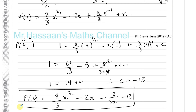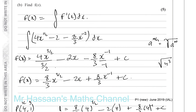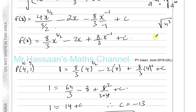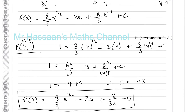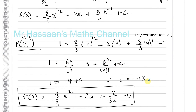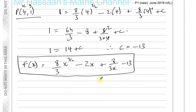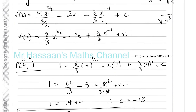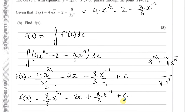To summarise: to find f(x), integrate the gradient function with respect to x, don't forget + c, and then use the known point on the curve to find c by substituting the x and y values. The left side equals 1, so for that to work c must be −13. That gives the equation of the curve.